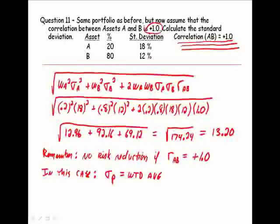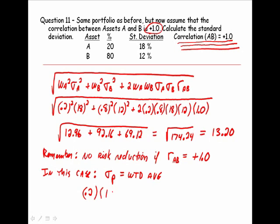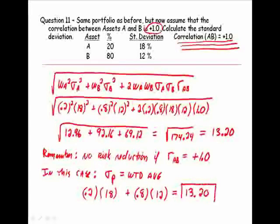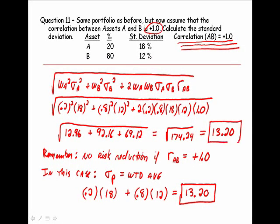Let's see if that's true. If 20% of our money is invested in asset A, which has a standard deviation of 18, and 80% of our money is invested in an asset that has a standard deviation of 12, the weighted average is 13.20. And notice, that is exactly the same thing we get here. So the only time that you would ever calculate the standard deviation of the portfolio to be a weighted average is if the correlation between the assets is perfect positive.